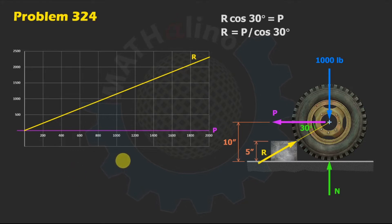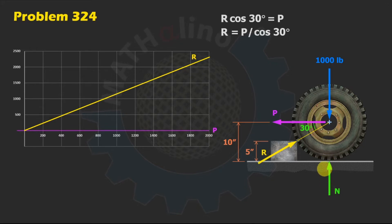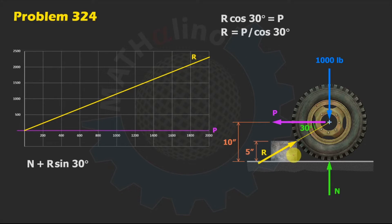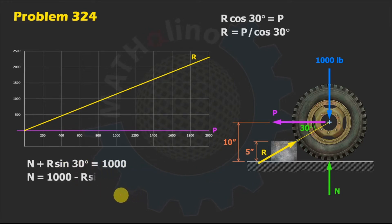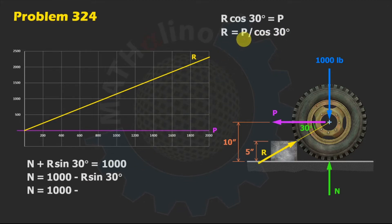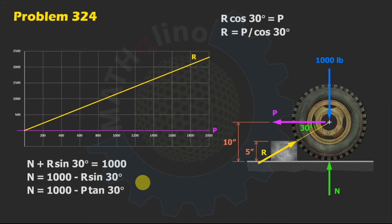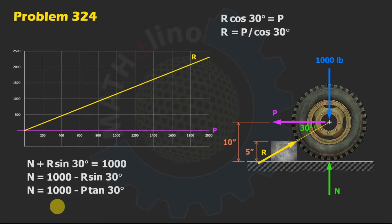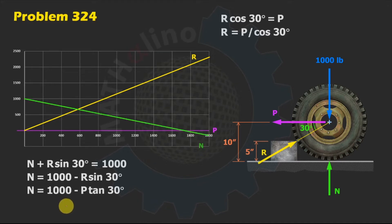For the normal force N at the floor, summing forces in the vertical direction gives: N plus R sine 30 degrees equals 1,000 pounds. Transposing, N = 1,000 minus R sine 30. Substituting R = P over cosine 30, this simplifies to N = 1,000 minus P times tangent 30. This is also linear in P — starting at 1,000 when P is zero, decreasing as a downward straight line.